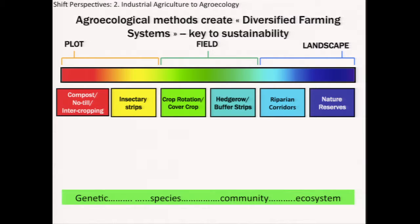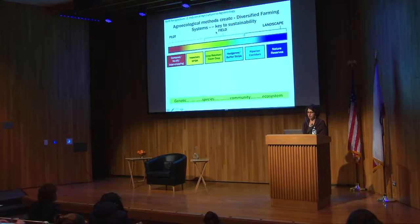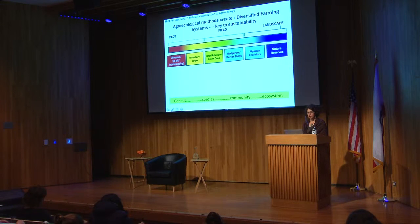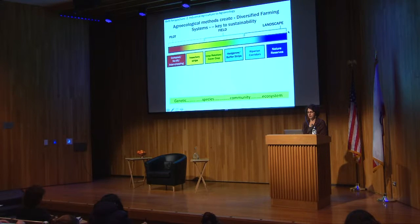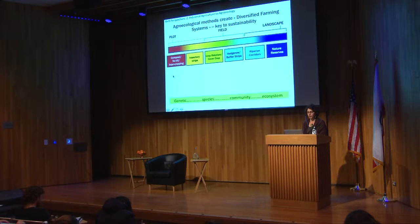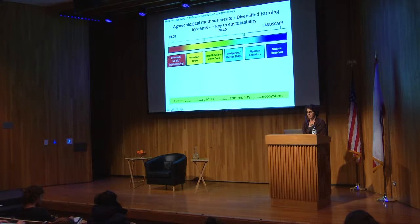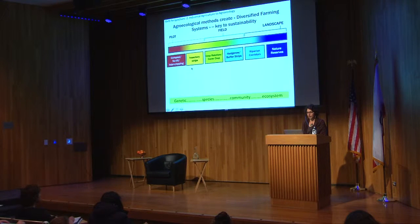Agroecological methods create what I like to think of as diversified farming systems, and it's this diversification that is really the key to the sustainability inherent in agroecological methods. We can think about the many techniques as being arrayed along scales from plot to field to landscape scale. At the plot scale, we have things like composting, no-till agriculture, and intercropping — that's sort of within the field.